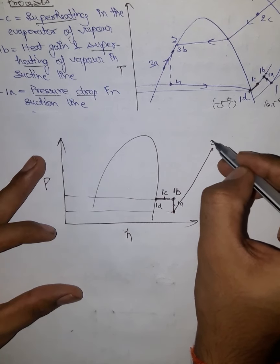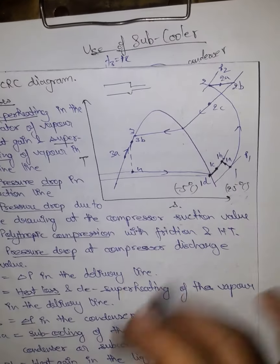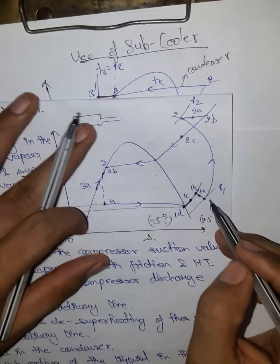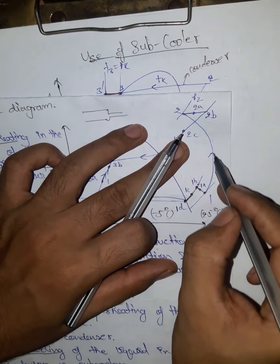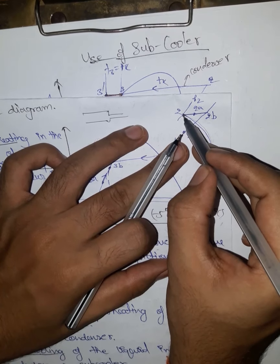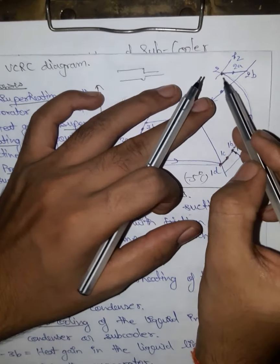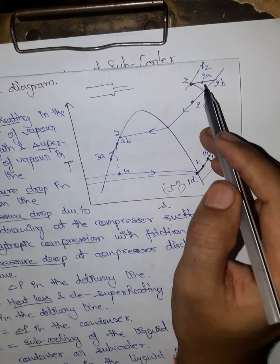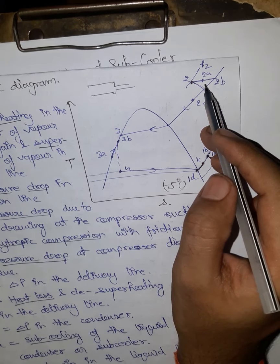The polytropic compression takes us from point 1 to point 2. Point 2 represents the outlet of the compressor. At this point, further losses begin to occur on the discharge side of the compressor.